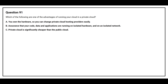Question number 91: Which of the following are one of the advantages of running in a private cloud? Option A: You own the hardware so you can change private cloud hosting providers easily. Option B: Assurance that your code, data, and applications are running on isolated hardware and on an isolated network. Option C: Private cloud is significantly cheaper than the public cloud.